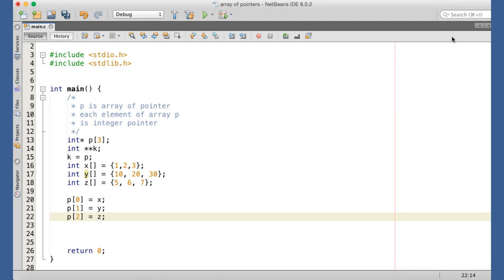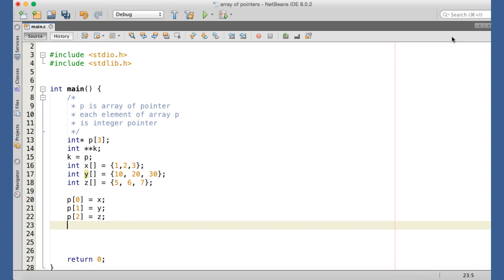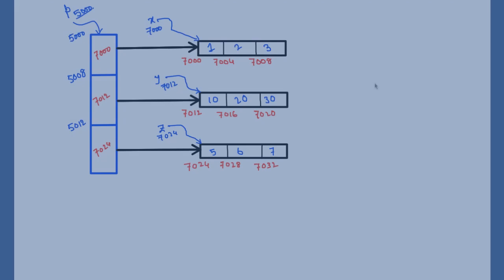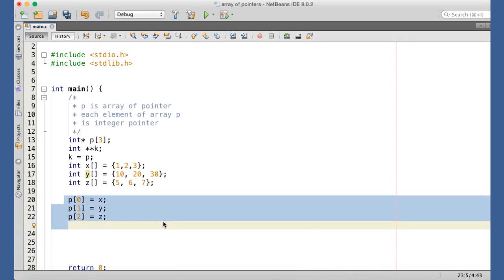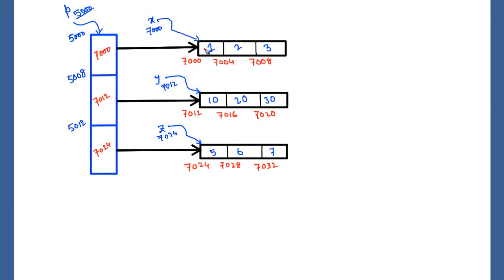Let me draw the block diagram to make things clearer and show how a two-dimensional array can be modeled using an array of pointers. P[0] points to the first element of array X, P[1] points to the first element of array Y, and P[2] points to the first element of array Z. We assume array X starts at 7000, Y at 7012, and Z at 7024. These base addresses are stored in P[0], P[1], and P[2].